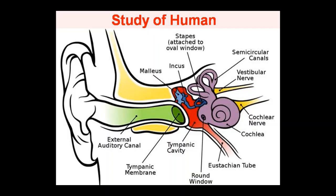Good morning students, this is your anatomy and physiology class. Today we will discuss the sensory organs of our body, specifically the ear. Sensory organs include the ear, nose, and skin.